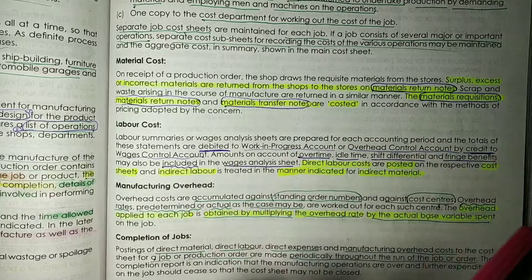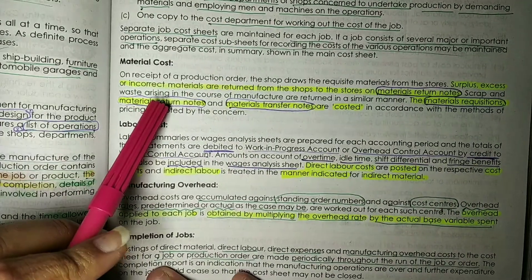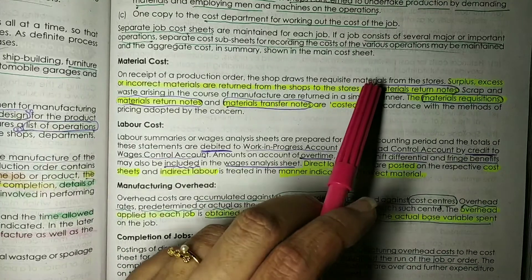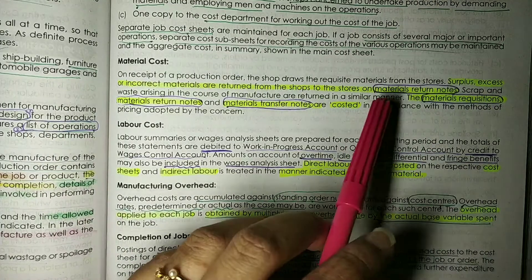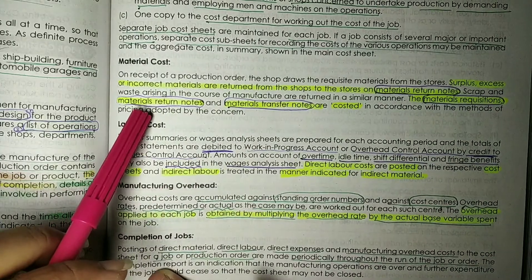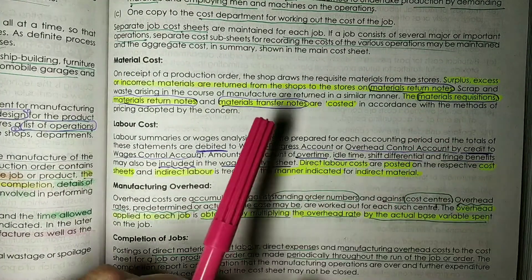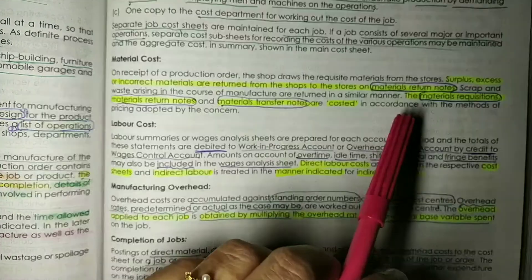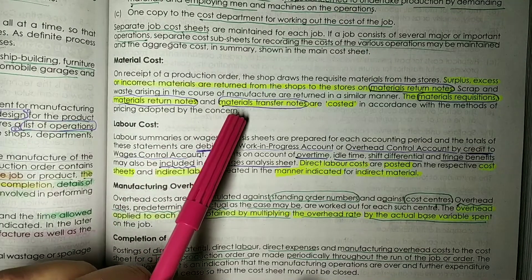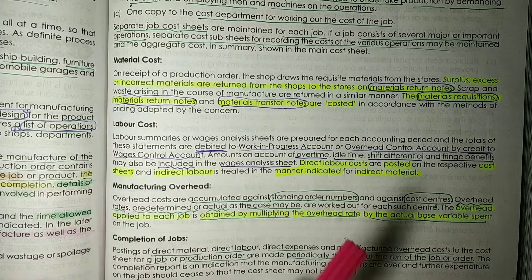The material that is not used, or if there is a wrong material, they return it to the store. What they issue is called materials return notes. Scrap and waste which arise during manufacturing time are also returned to the stores. The materials requisitions, materials return notes, and materials transfer notes are costed in accordance with the methods of pricing adopted by the concern.